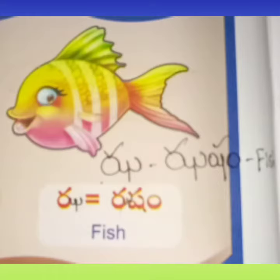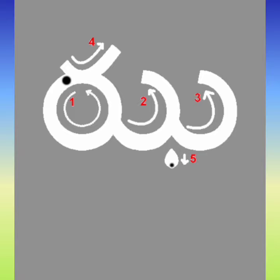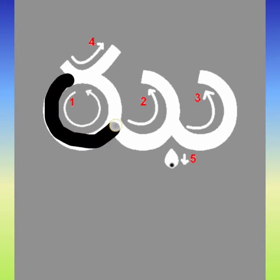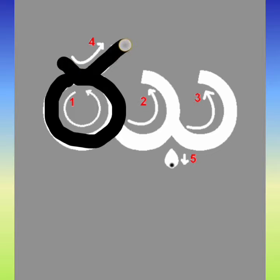Now today we are going to learn the 25th and 26th letters. Jha — jhasham, fish. In your reader there is a printing mistake for this letter. Now I am showing the correct form of letter Jha.